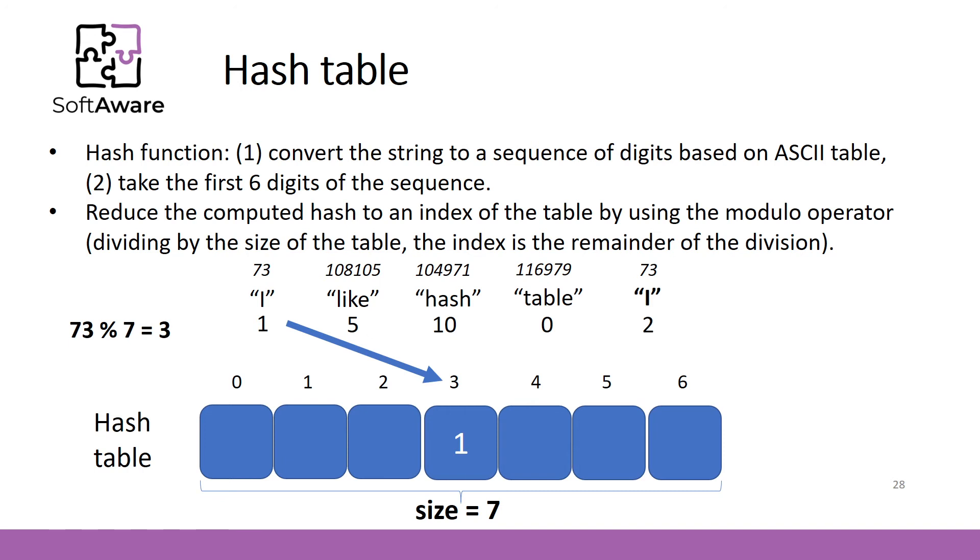We divide 73 by 7. The reminder is 3. This is our index and we store the value at this index. 108105 divided by 7, reminder is 4. We can store the associated value at the index. We carry out the same operation for the rest of the keys. You can see that this time we have mapped the keys a lot better. In fact, we have avoided the collision at all.